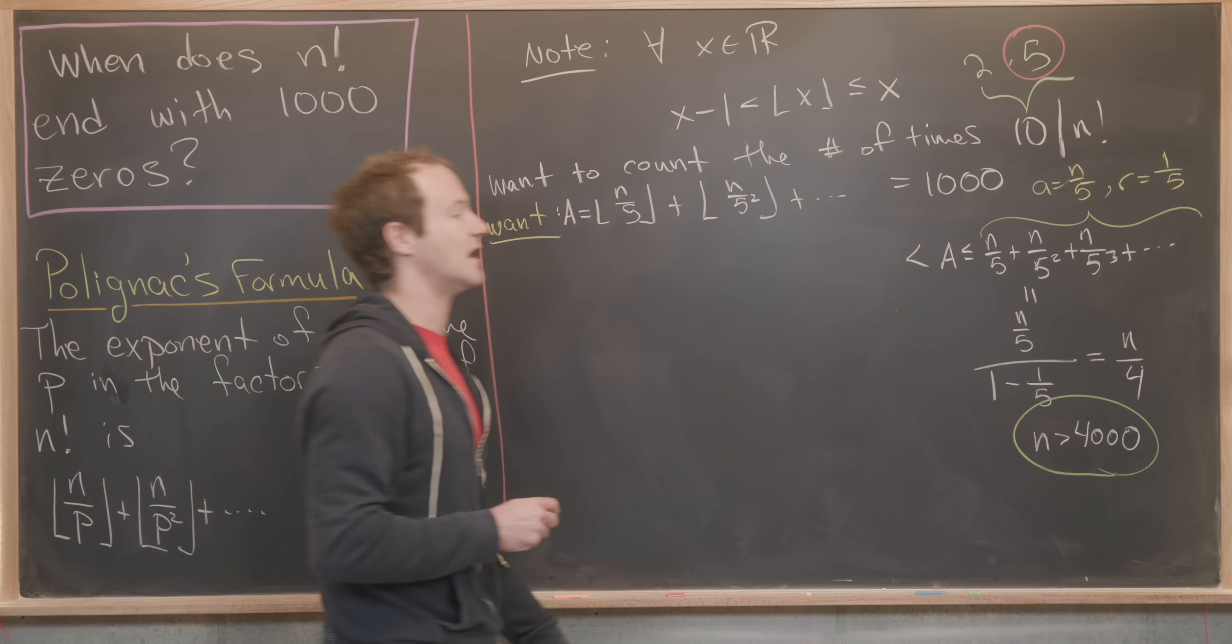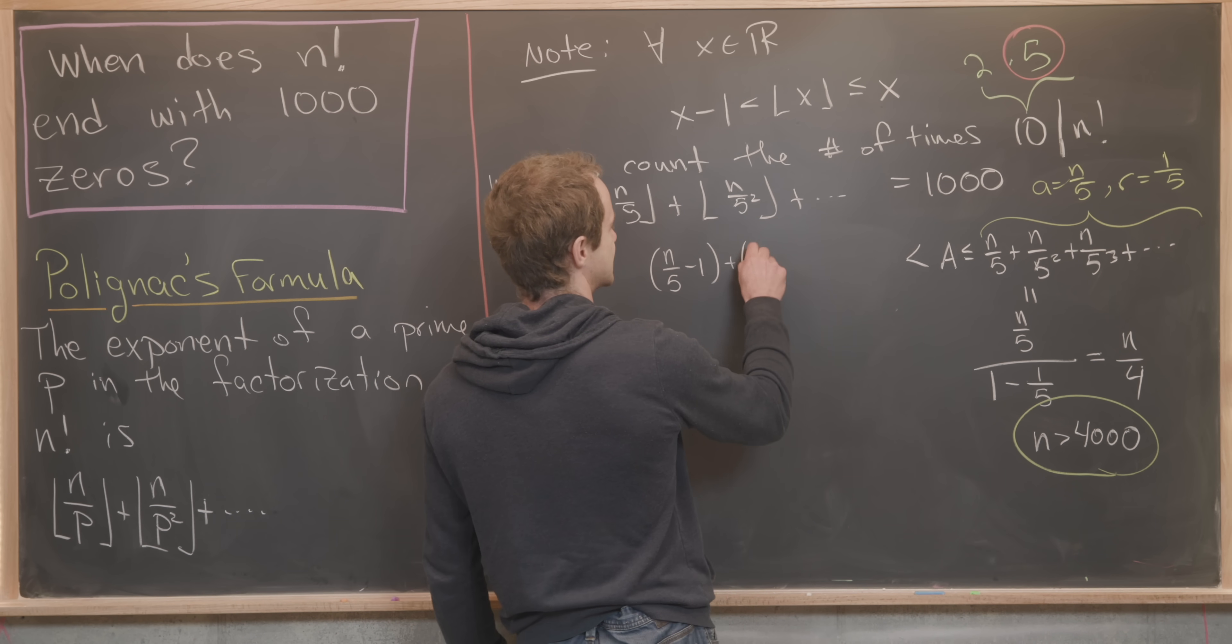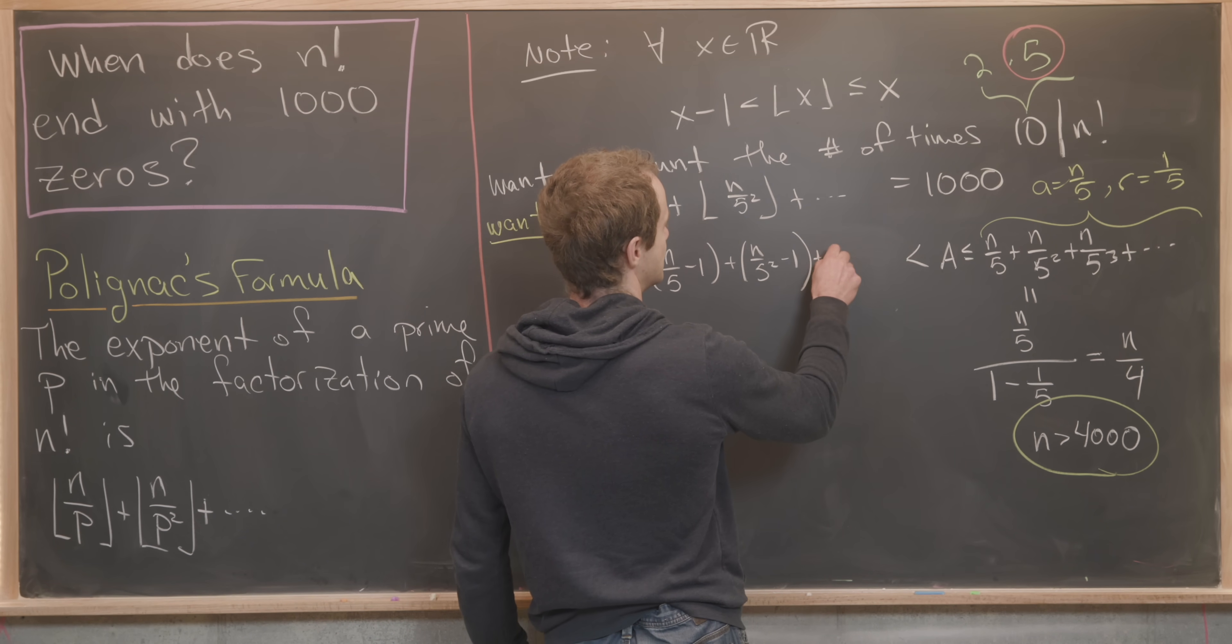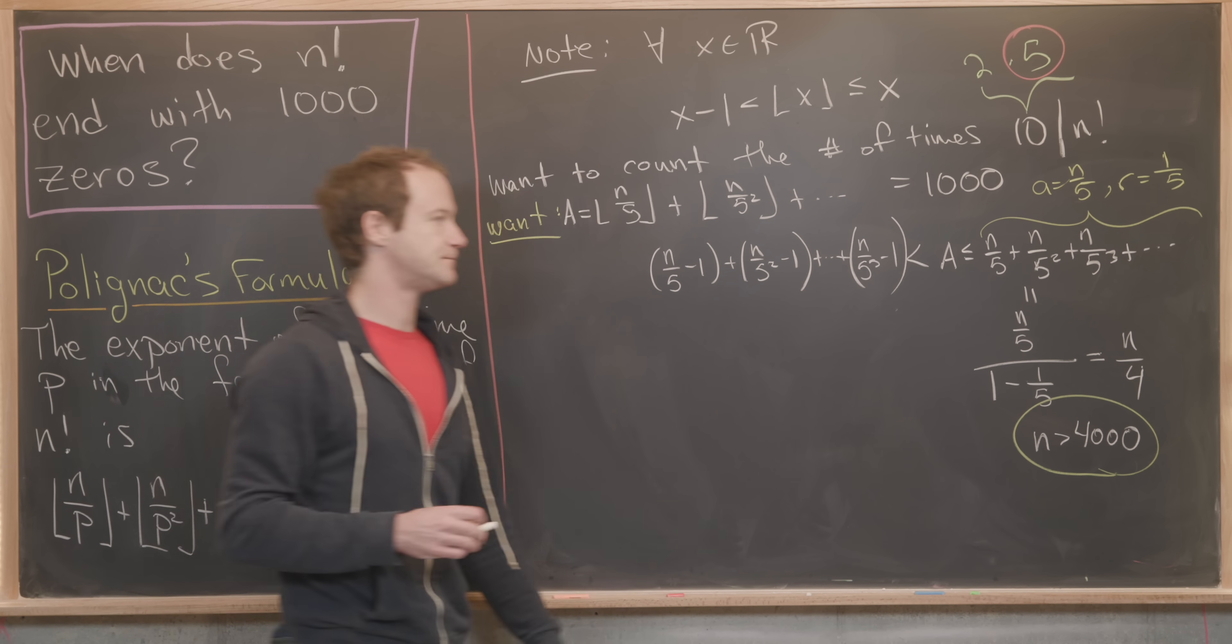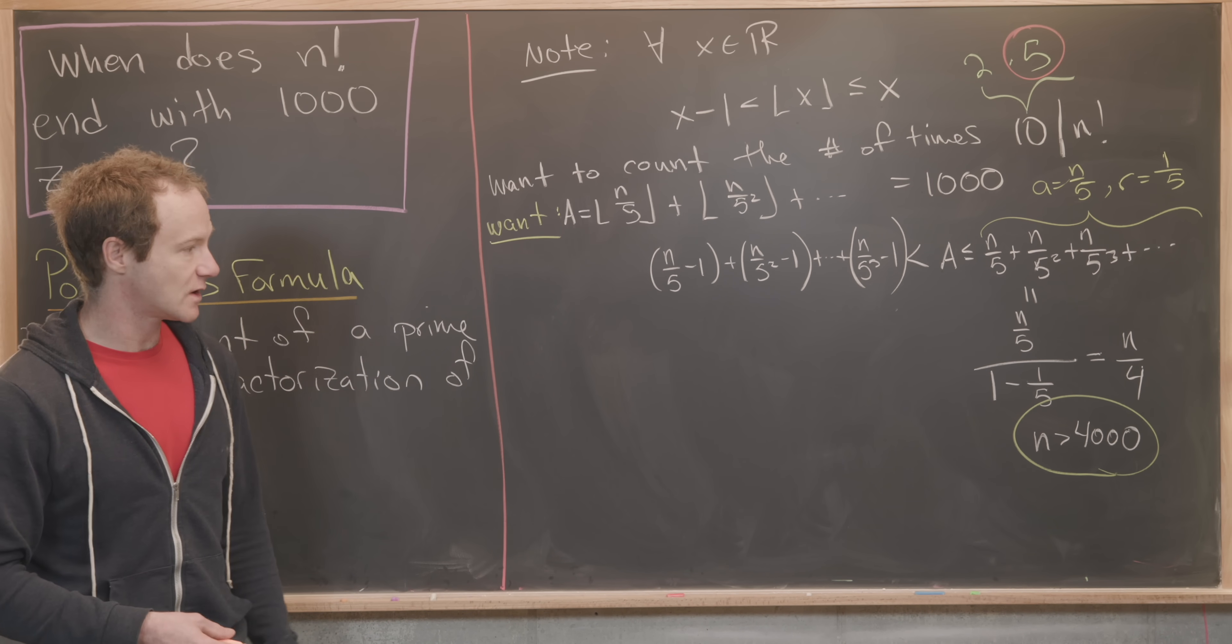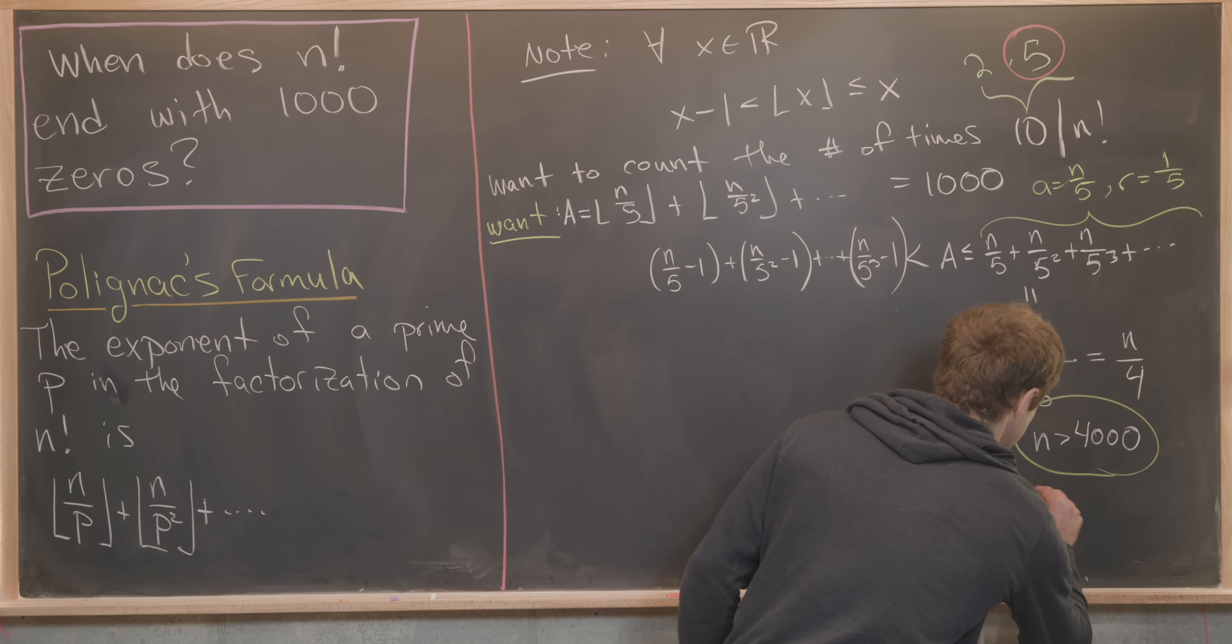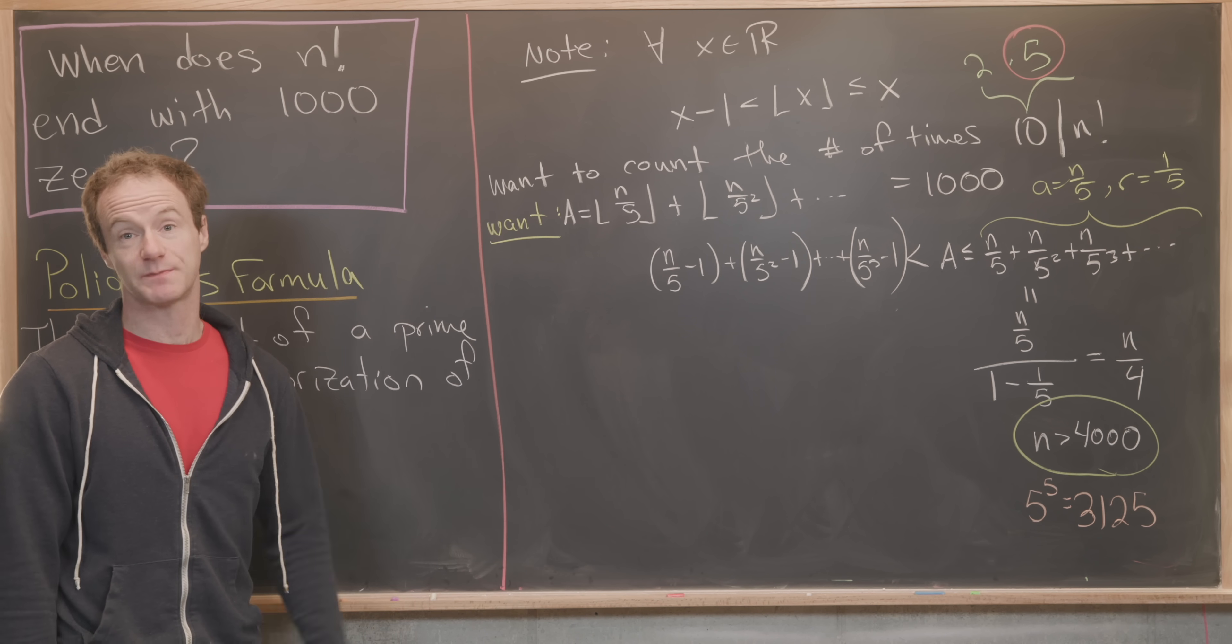This is going to live above the following object. We'll have n over five minus one, plus n over five squared minus one, and that's going to end at n over five to the fifth minus one. Why does it end at n over five to the fifth minus one? That's because five to the fifth is equal to 3125, which sets us up for the top part of this sum, because that's the lowest power of five that is less than 4000.